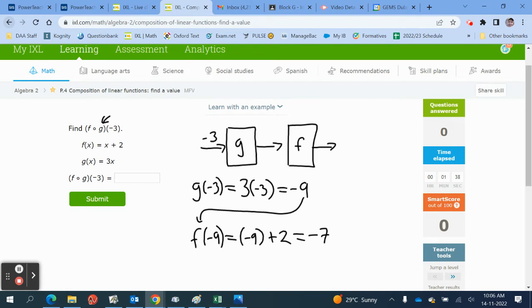This is what comes out. Therefore, f of g of minus 3 is equal to negative 7. So, coming out of here is minus 9, and coming out of here is minus 7. Our result is minus 7.